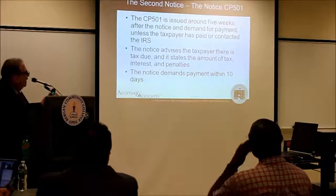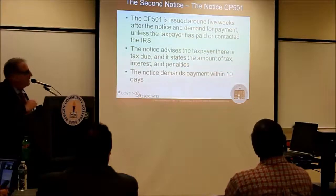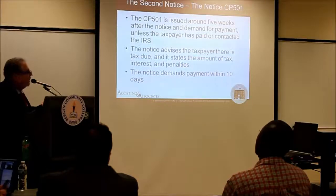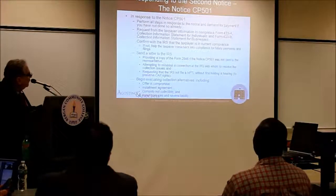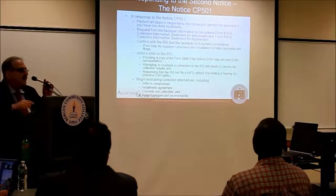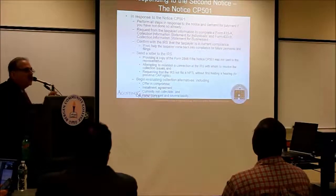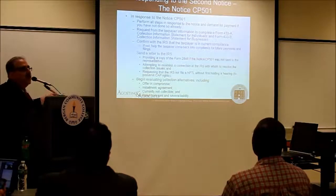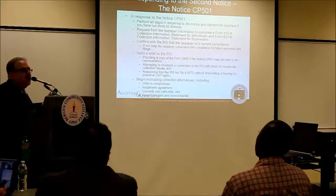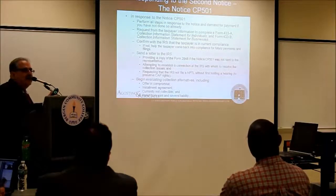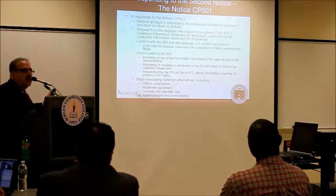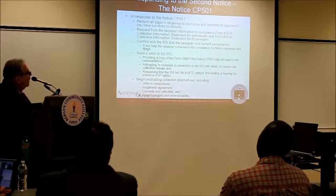In that five to six weeks later, you're going to get a reminder notice — your notice and demand. But you've already started the process. At the CP501, you send a letter. If you haven't already, send the 2848. Start evaluating your collection alternatives — getting from the taxpayer everything needed to fill out the CIS, which is the Form 433 series: Form 433A for individuals, Form 433B for businesses, and Form 433F.